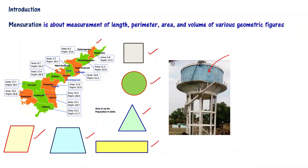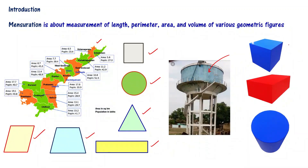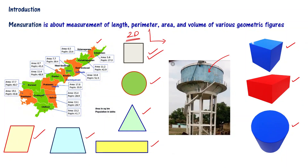We are going to discuss the lengths, perimeters and areas of these plane shapes. And for solid figures — cube, cuboid and cylinder — we are going to learn about their surface area and volume as well. The figures you see here are called 2D figures, meaning two dimensions are required to specify them. Cube, cuboid and cylinder are called 3D figures — you need three dimensions to specify these kinds of figures.